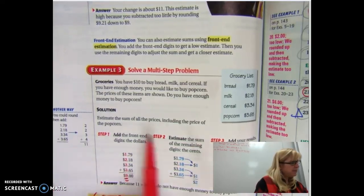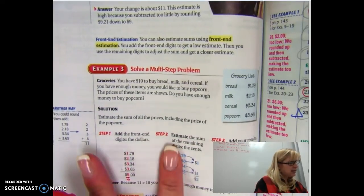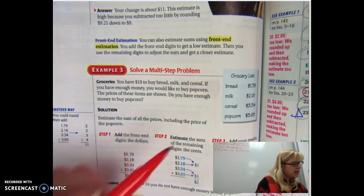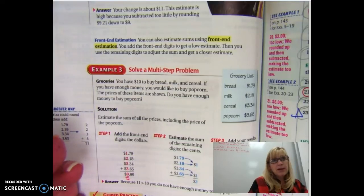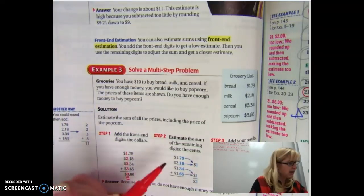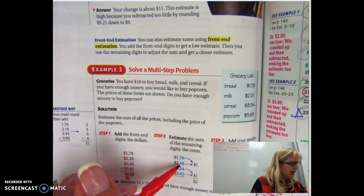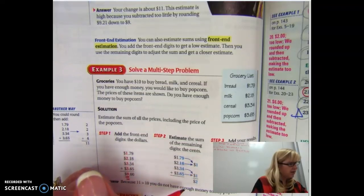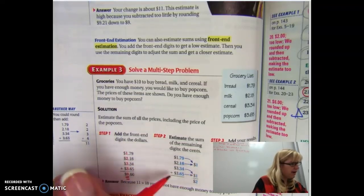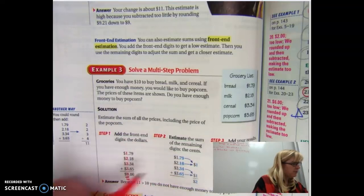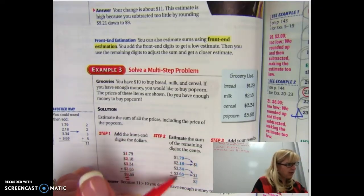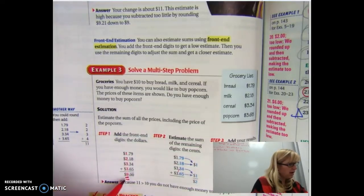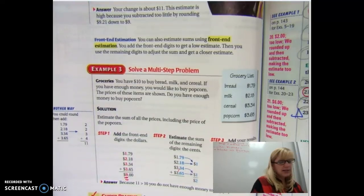And then step two is estimate the cents. And what you're trying to do is you're trying to circle up two numbers that or maybe three that are pretty close to a dollar. So look at 79 and 18 pretty close to a dollar. 34 and 65 also pretty close to a dollar. So you added this up to nine. You have two extra dollars that you rounded up by circling these at the end. So that's two. Nine plus two is about 11.